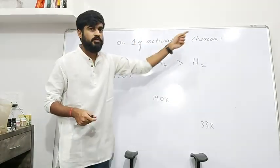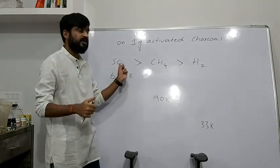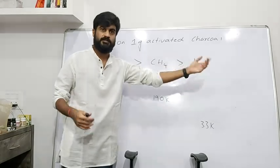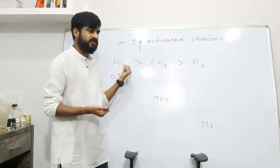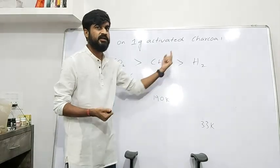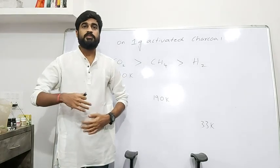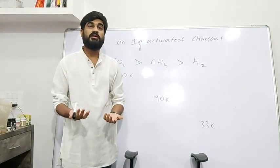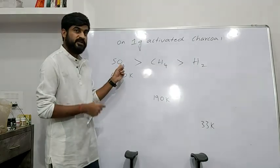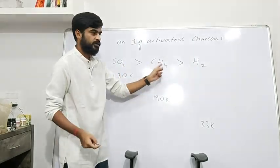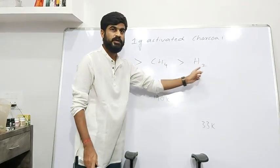With 1 gram activated charcoal, sulfur dioxide shows the highest adsorption. The extent of adsorption of SO₂ is greater than methane, and methane is greater than hydrogen. This is because easily liquefable gases are more easily adsorbed. Sulfur dioxide is more easily liquefable compared to methane, and methane is more easily liquefable compared to hydrogen.